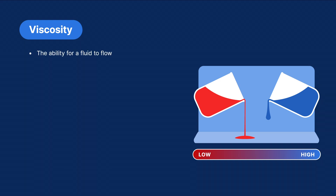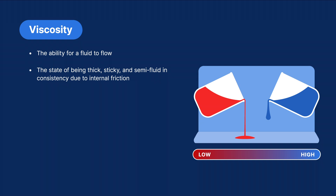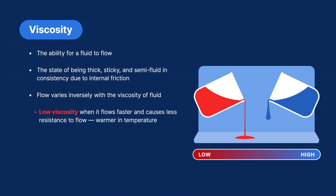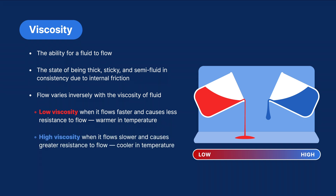A characteristic of fluid contrast elements to understand is viscosity. Viscosity is the ability for a fluid to flow — it can be described as the state of being thick, sticky, and semi-fluid in consistency due to internal friction. Flow varies inversely with the viscosity of a fluid. A fluid has low viscosity when it flows faster and causes less resistance to flow; for example, if a contrast is warm in temperature, it tends to flow faster. A fluid is high in viscosity when it flows more slowly and causes greater resistance to flow; for example, if a contrast is cooler in temperature, the flow is slower.